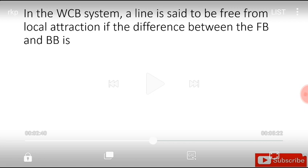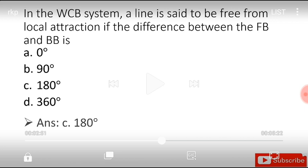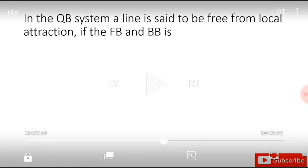In WCB system, a line is said to be free from local attraction if the difference between the FB and BB is 0 degree, 90 degree, 180 degree, or 360 degree. The answer is 180 degree.